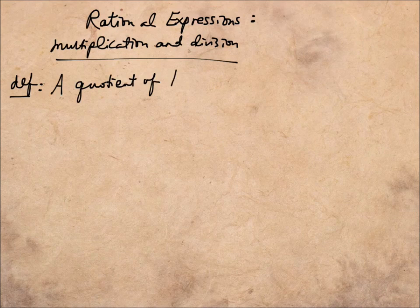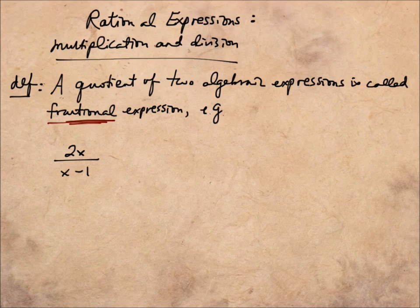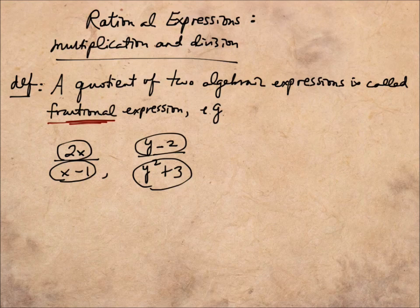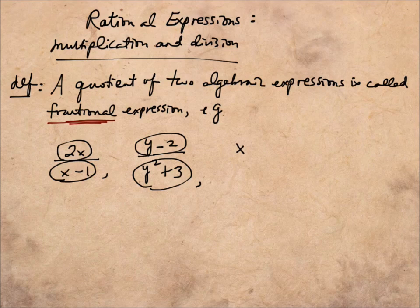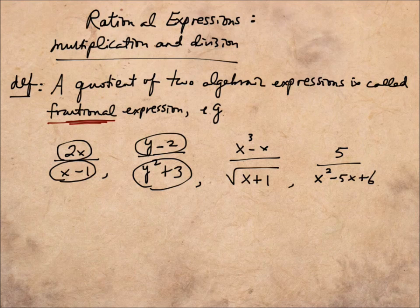Let's start with the definition. A quotient of two algebraic expressions is called a fractional expression. For example, 2x over x minus 1 is a fractional expression because we have two algebraic expressions written in terms of the unknown x. Another example would be y minus 2 divided by y squared plus 3. Two more examples: x cubed minus x divided by square root of x plus 1, and simply a number on top with x squared minus 5x plus 6 on the bottom. All four of these are called fractional expressions.